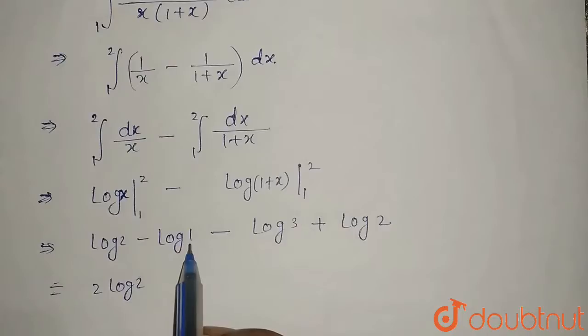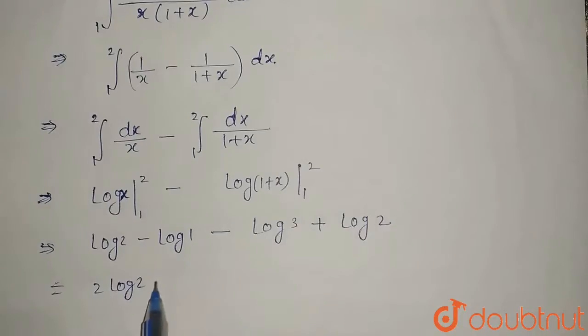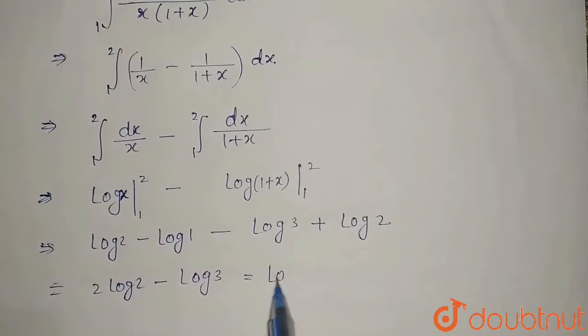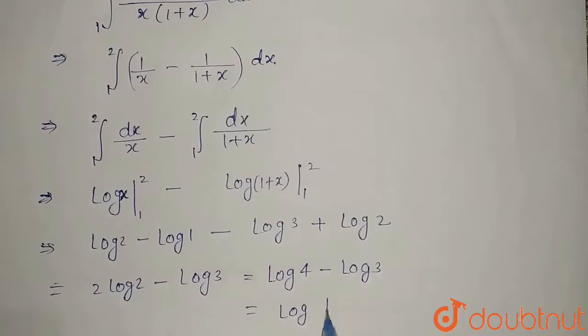Log 1 equals 0, so we have 2 log 2 minus log 3. Using logarithmic properties, 2 log 2 equals log 4. This is log 4 minus log 3, which equals log 4 by 3. So our answer is log 4 by 3.